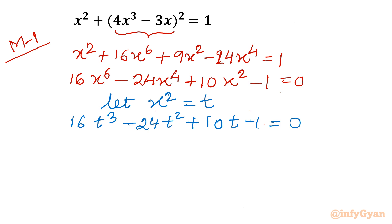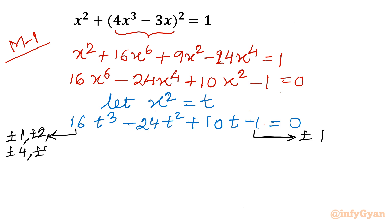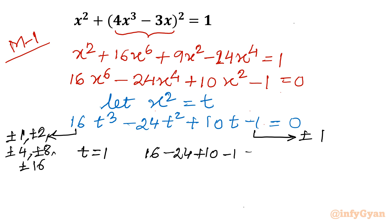I will use synthetic division and the rational root theorem. The eligible factors of the constant term are ±1, and the leading coefficient factors are ±1, ±2, ±4, ±8, ±16. We take the ratio of constant to leading coefficient for eligible solutions. Let's test t = 1: 16 - 24 + 10 - 1 ≠ 0, so it's not a solution.